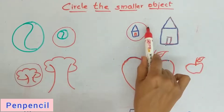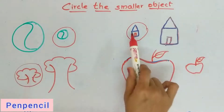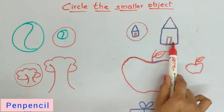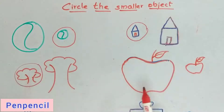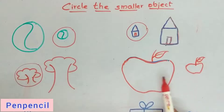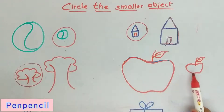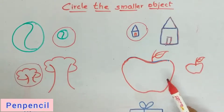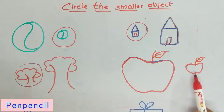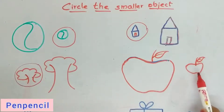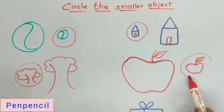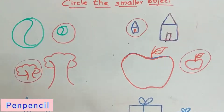This is a small heart, this is a big heart. Now, which apple do we have to circle — this apple or this apple? Which is bigger and which is smaller? Yes, correct — very good! This is the smaller apple.